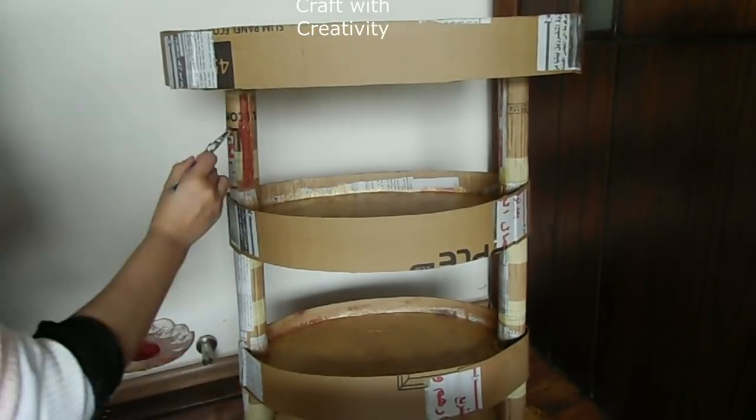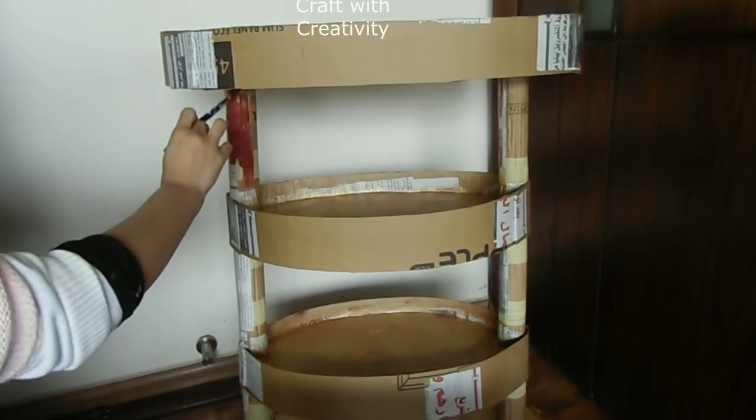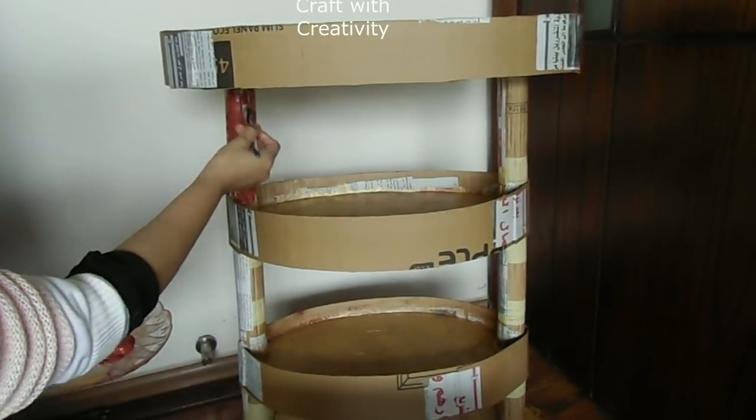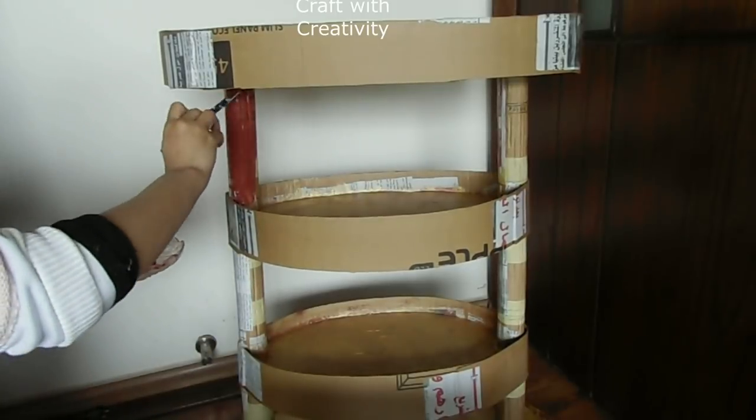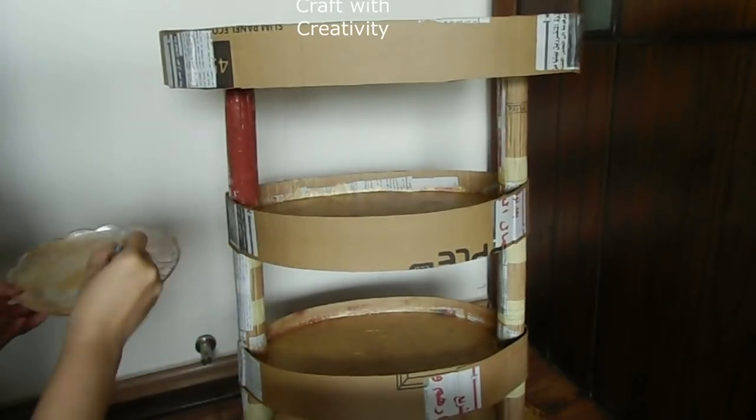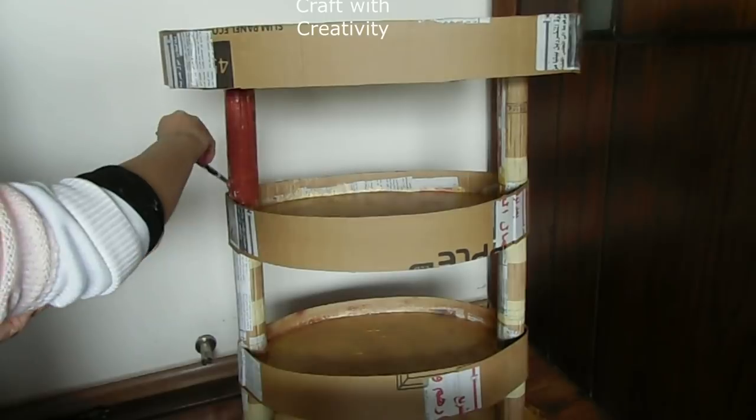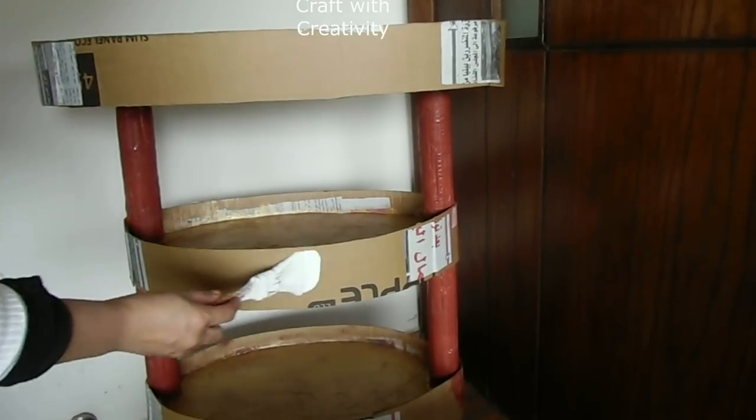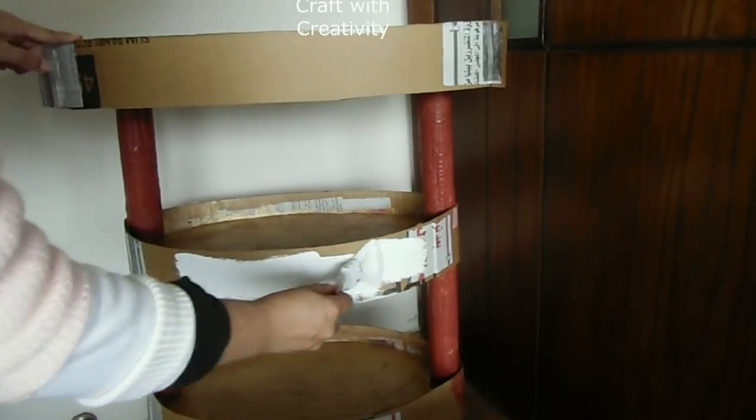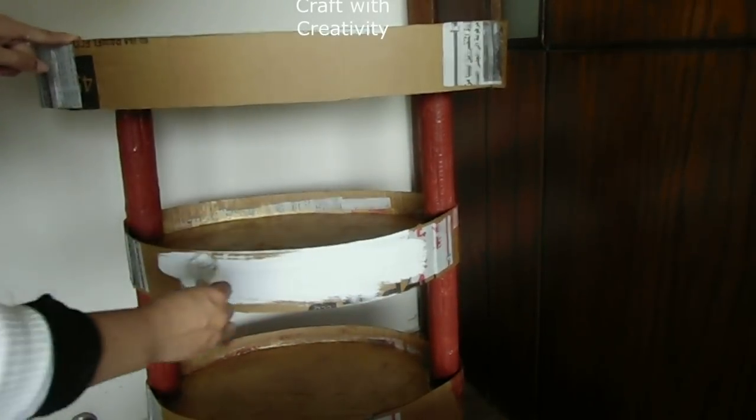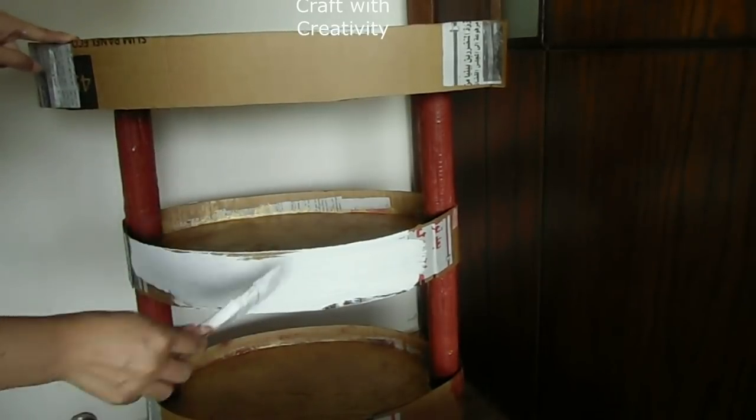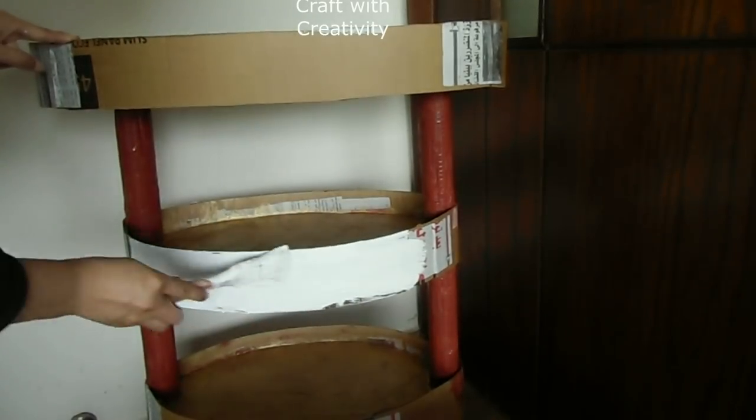On the legs I will use the same brown color. If you feel the brown color on the shelves became too dark, you can use the golden again on top of that and blend them together. For the sides, these white pieces here, I will use some white acrylic paint. Same thing you will do on the inner sides also—white color.